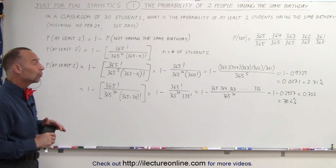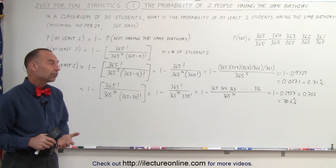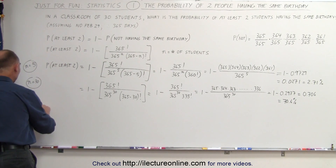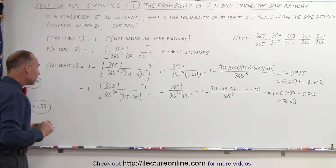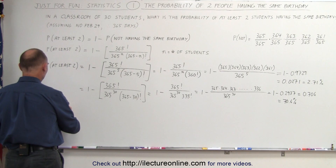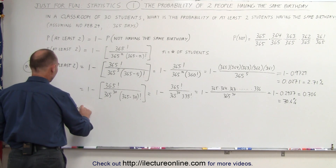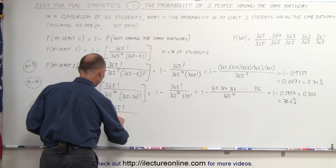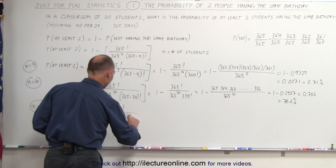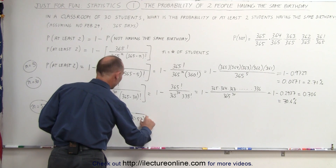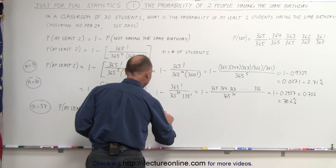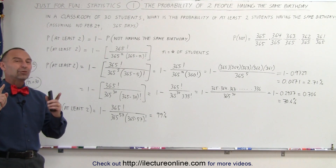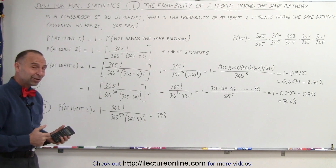Now, how many students would you need so that there's a 99% chance for two people in the room to share a birthday? It turns out that number is n equals 57. If there are 57 people in the room and you do the calculation — 1 minus 365 factorial divided by 365 to the 57th power times 308 factorial — the answer comes out to about 99%. There's almost complete certainty with 57 people in the room that at least two will share a birthday. And that's the magic of probability.